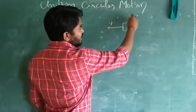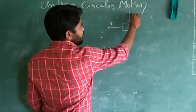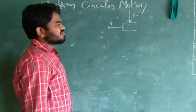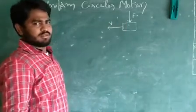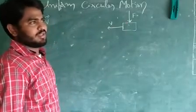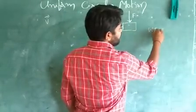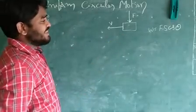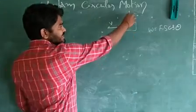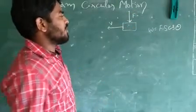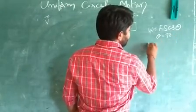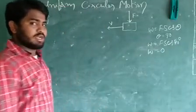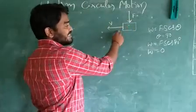So the block is moving with velocity v in a straight line. What I have done is applied a force F which is perpendicular to the velocity. You may think the magnitude of velocity will change. Let us see — we know that work done W equals F·s·cos θ, where θ is the angle between force and displacement. Since the force is perpendicular, θ = 90°, so W = F·s·cos 90° = zero. The work done by the applied force in this condition is zero.